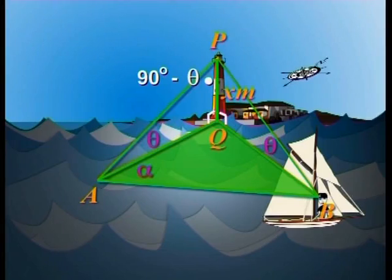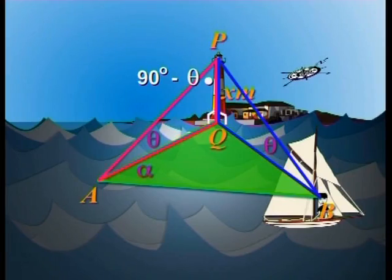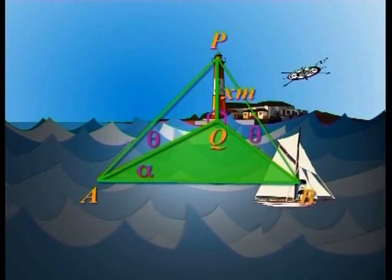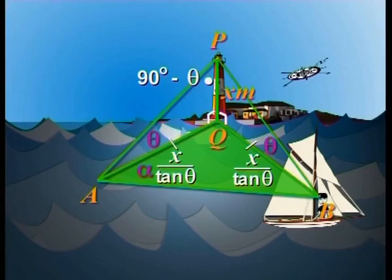And what about BQ? Triangle PQB is identical to triangle PQA — each has a right angle, an angle of theta, and the side opposite the given angle is X. So BQ is also X divided by tan theta. That's the key implication: the boat is the same distance from the lighthouse at both positions. If it were closer, the angle of elevation would be greater than theta; if further away, it would be smaller. So the triangle AQB on the ground is isosceles, and the angle at B is also alpha.